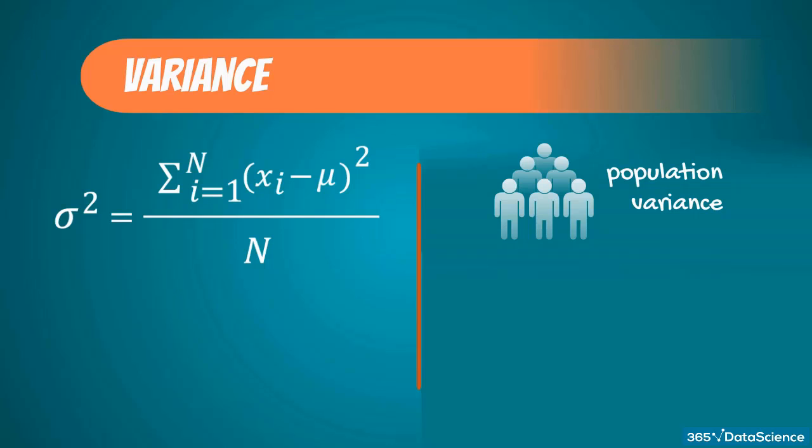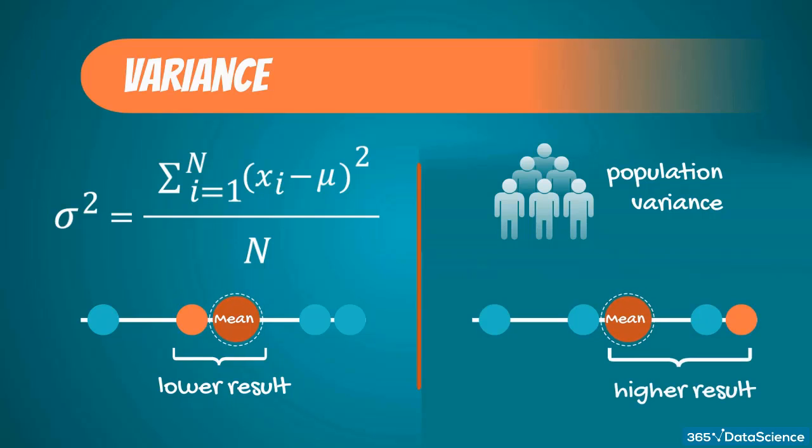The sum of differences between the observations and the mean, squared. So, the closer a number to the mean, the lower the result we will obtain, right? And the further away from the mean it lies, the larger this difference.